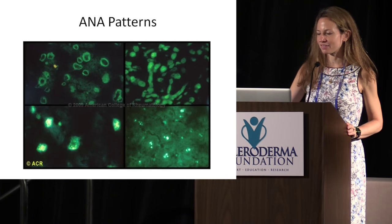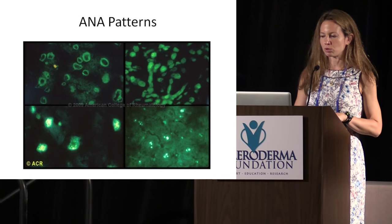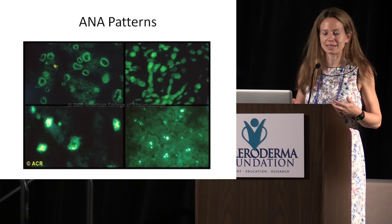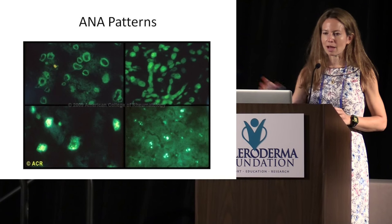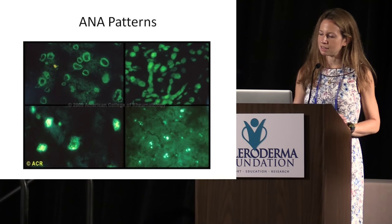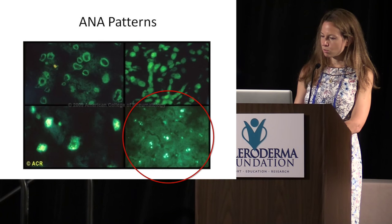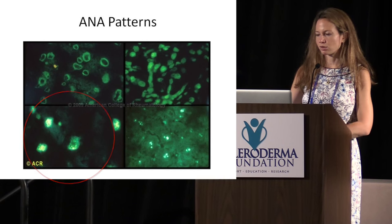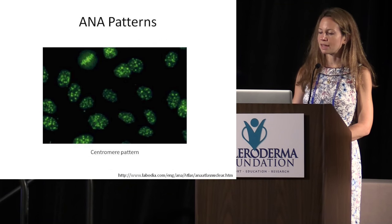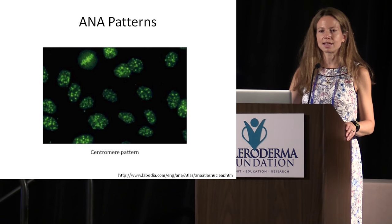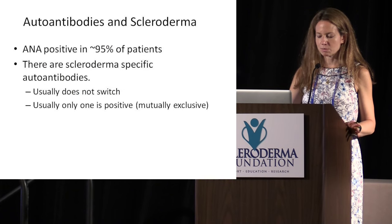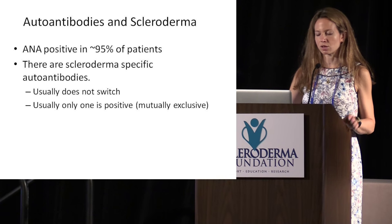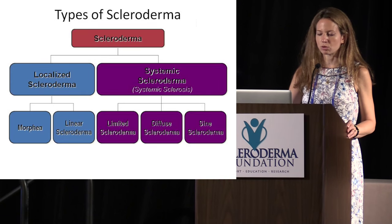These are patterns of ANA. When you use standard cells and the patient's serum — the part of the blood that has all the proteins but not the cells — you add in some other antibodies that fluoresce and you're able to see these different patterns. The nucleolar and speckled patterns are the two we tend to see in systemic sclerosis, though you could see other patterns too. This is an ANA with a centromere pattern — a technician will read these. ANA is positive in most patients with scleroderma and usually doesn't switch.